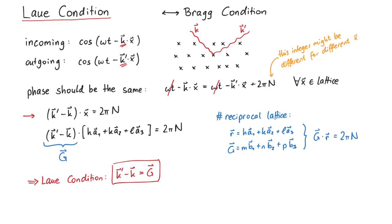By doing an experiment, we know the incoming wave vector k, we can measure the outgoing wave vector k-prime whenever we get constructive interference, and this leads us to information about the crystal lattice by means of the reciprocal lattice vectors g.